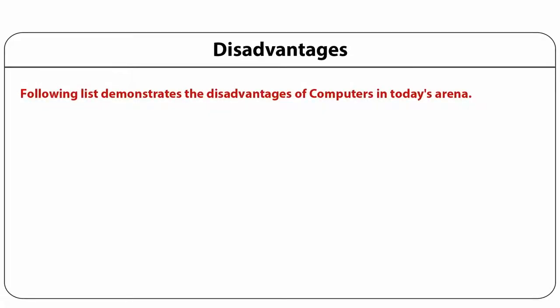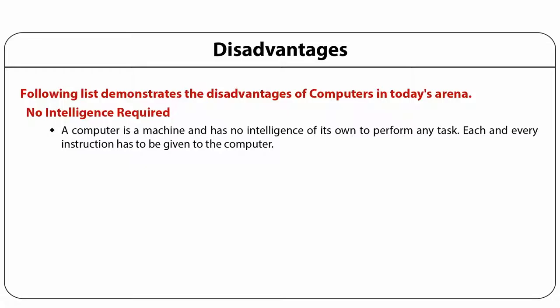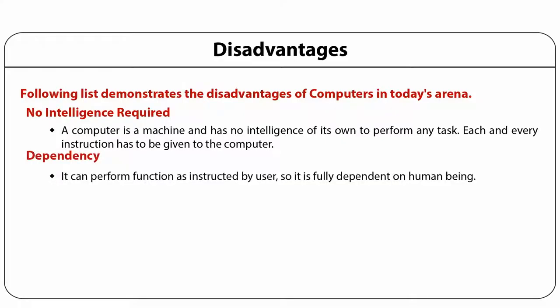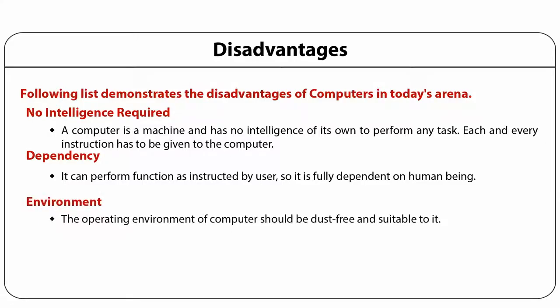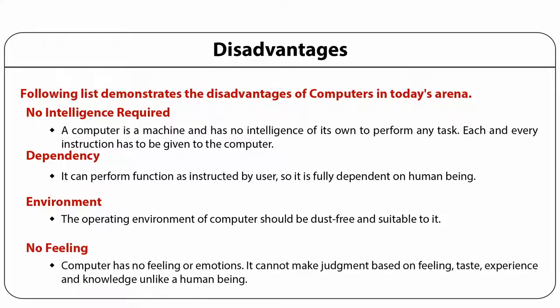The disadvantages of computers include: there is no intelligence involved — a computer is a machine which has no intelligence of its own, and each and every instruction has to be given to it; it cannot take any decision on its own. Second is dependency — it can perform functions only as instructed by the user. Third is the environment — the operating environment should be dust free and suitable for operating. There are no feelings or emotions; it cannot make any judgment based on feeling, taste, experience and knowledge unlike a human being.